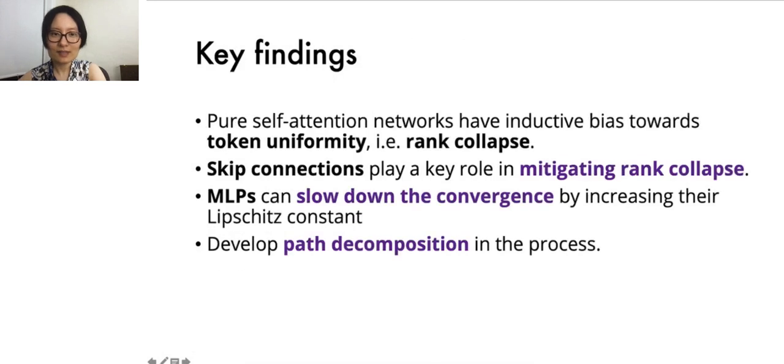Here are some key takeaways from our work. Pure self-attention networks have an inductive bias where all tokens become uniform, and the rank of the model output becomes 1, i.e., the rank collapses.